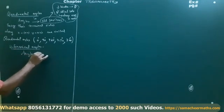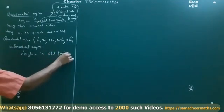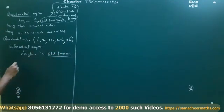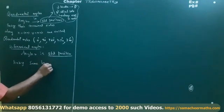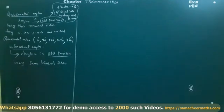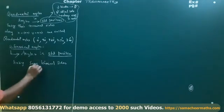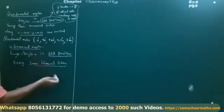Co-Terminal Angles: these are angles in standard position having the same terminal sides. The terminal sides are the same. Co-terminal angles are angles in standard position having the same terminal sides along the extension of the x-axis.